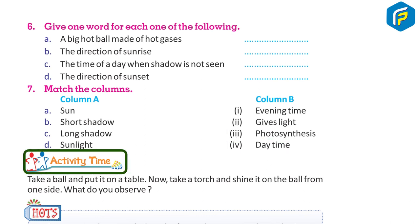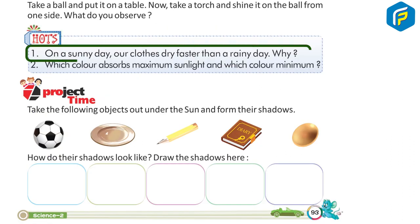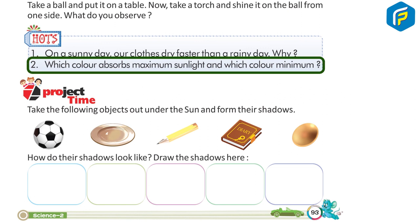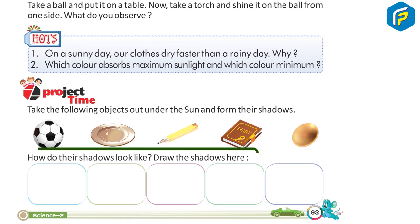Activity time. Take a ball and put it on a table. Now take a torch and shine it on the ball from one side. What do you observe? Hearts: 1. On a sunny day, our clothes dry faster than a rainy day. Why? 2. Which color absorbs maximum sunlight and which color minimum? Project time: Take the following objects out under the Sun and form their shadow. How do their shadows look like? Draw the shadow here.